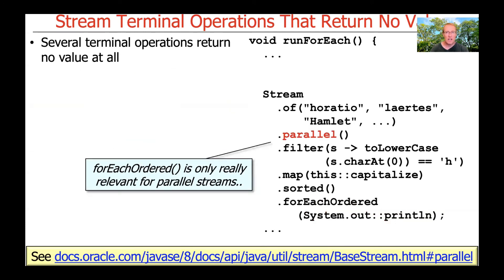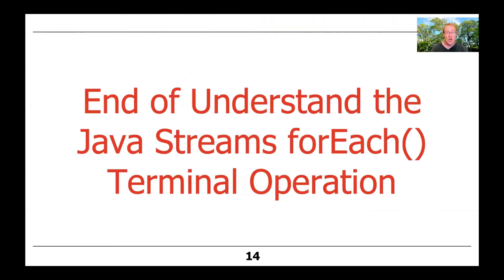ForEachOrdered really only is significant for parallel streams. You would never want to use forEachOrdered on a sequential stream because the ordering is going to be dictated by the encounter order anyway, just by virtue of how streams work under the hood. That's the end of the forEach family of terminal operations. The real interesting part are the reduction operations, and that's what we'll turn our attention to next.